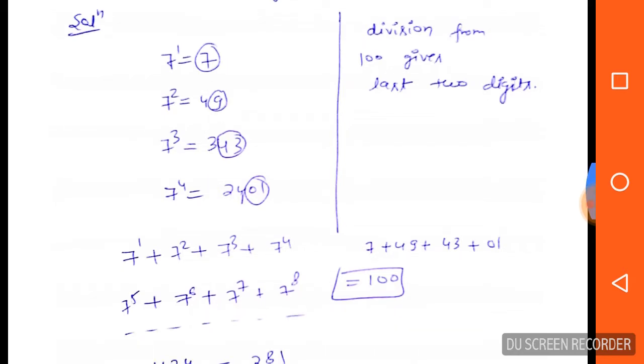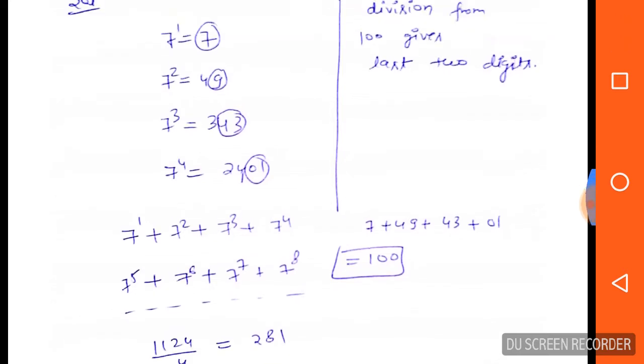If you check the last two digits, these are 07, 49, 43, and 01. Now add all: 7 + 49 + 43 + 01, total will be 100.